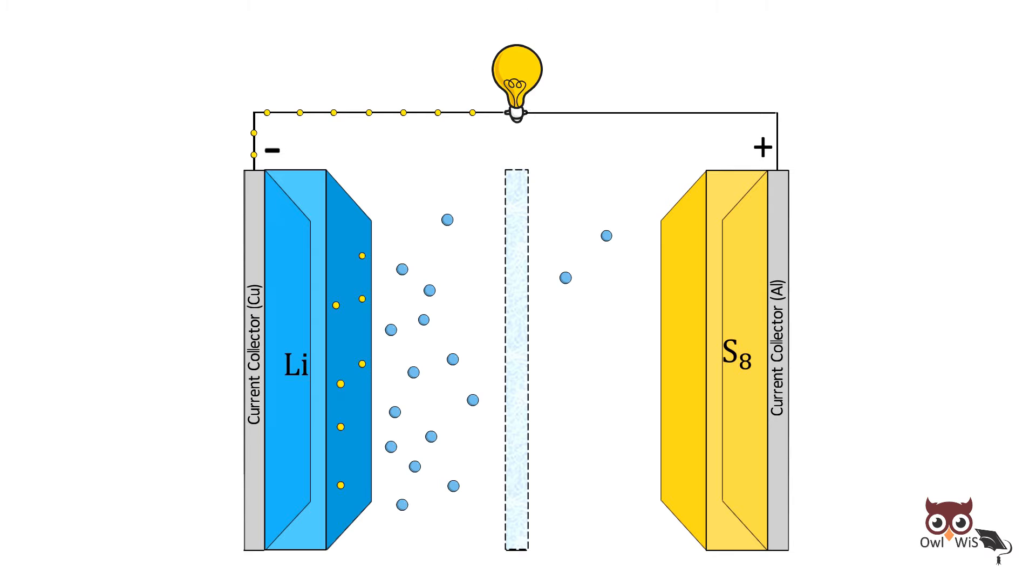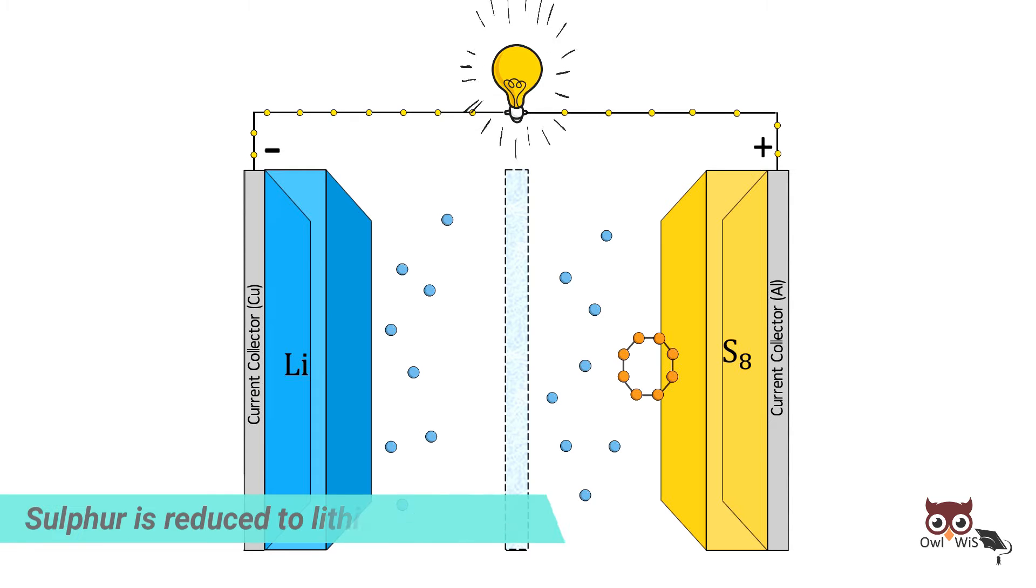The lithium ions in the electrolyte migrate to the cathode through the separator while the electrons travel to the external circuit. Sulfur is reduced to lithium sulfide via a multi-step reduction process.